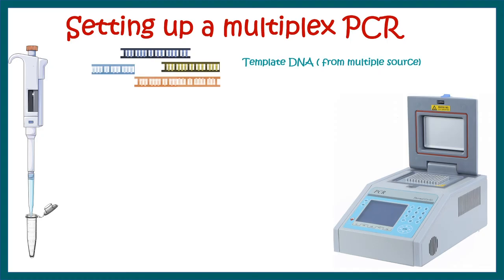The biggest difference is the template DNA. Here, the template DNA would be from multiple sources, so you would expect different types of targets present in that DNA. Obviously, the forward and reverse primers would be a combination of many sets.